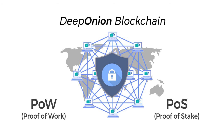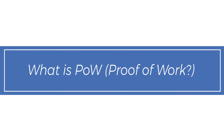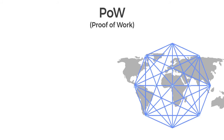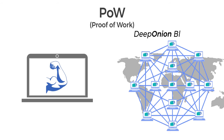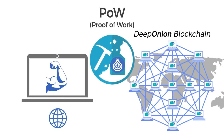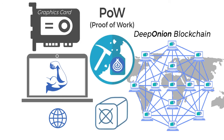What is POW or proof of work? Proof of work is a method that verifies and secures transactions on the DeepOnion blockchain. It requires a very powerful computer and an internet connection. Thanks to this system, people can mine using graphic cards or special computer hardware. This helps the DeepOnion blockchain run smoothly and the transactions are completed.